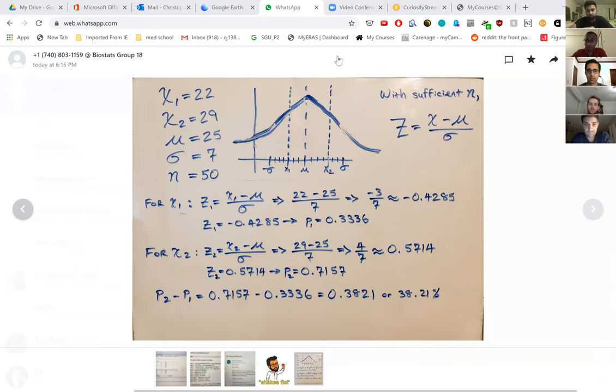In the current problem, we are given a sample size of 50 and an upper limit of 29 and a lower limit of 22. The standard deviation is 7 with a mean of 25.